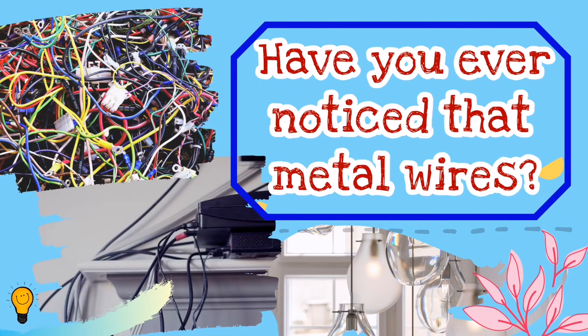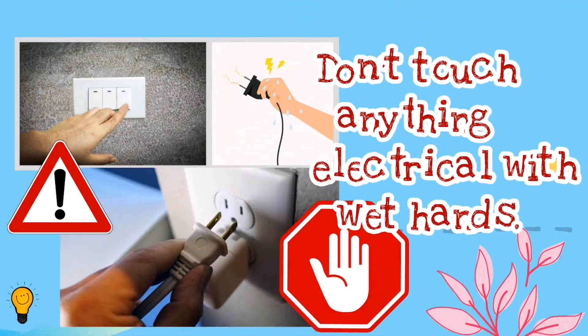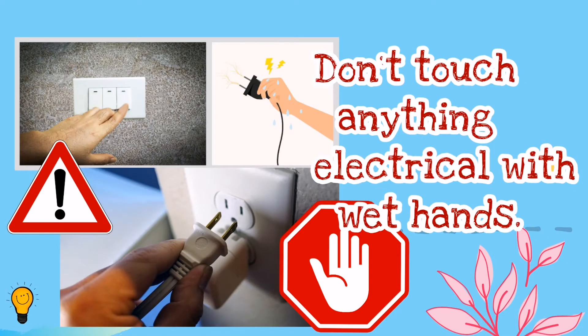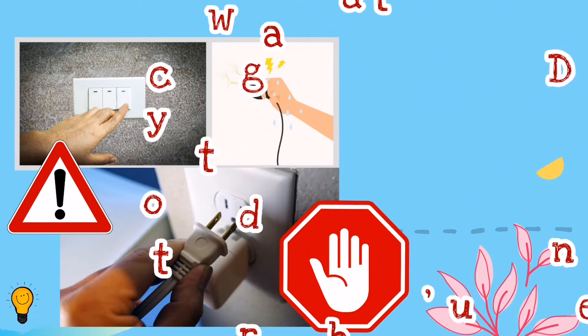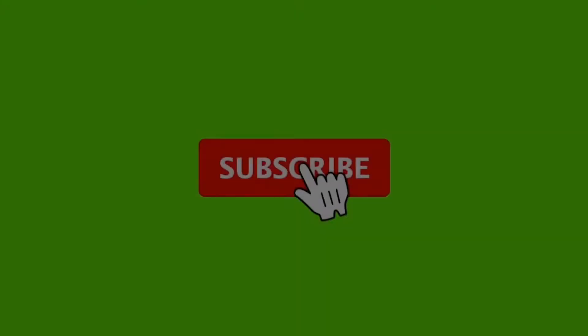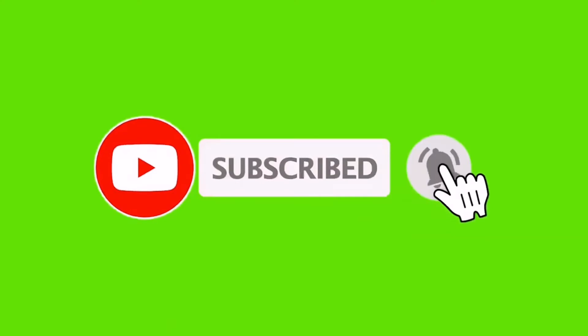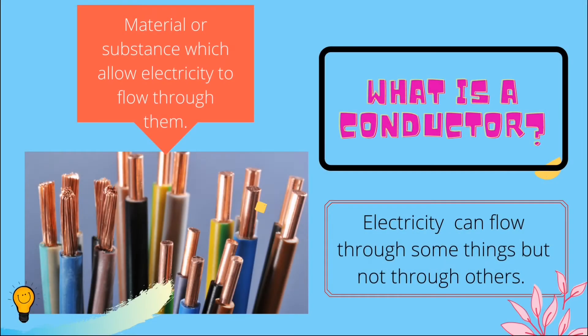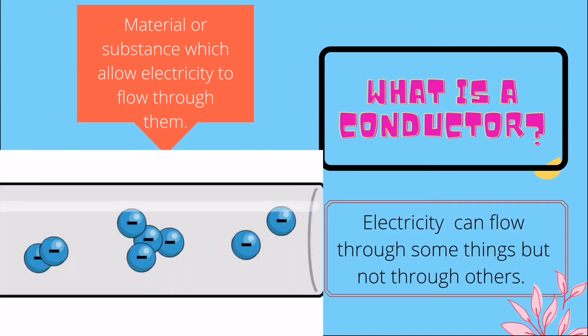Have you ever noticed that metal wires to TVs, computers, and appliances are wrapped in plastic or rubber? Or why are we not supposed to touch anything electrical with our hands? In this video, we will go through the reasons for that. Electricity can flow through some things but not through others.